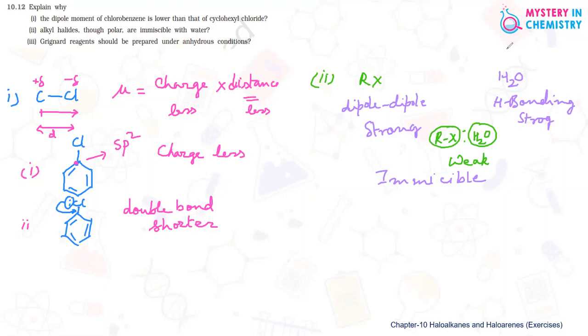And third one is: Grignard reagent should be prepared under anhydrous condition. Now Grignard reagent is actually a very reactive substance. When it is treated with water, immediately it is giving alkane and magnesium hydroxy bromide.